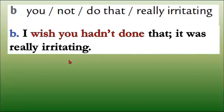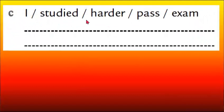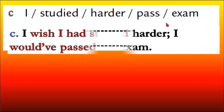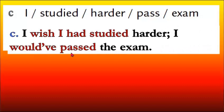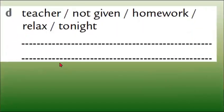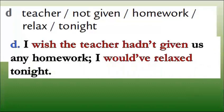Sentence C: 'I studied harder — pass exam.' Answer: 'I wish I had studied harder — I would have passed the exam.' Sentence D: 'Teacher not given homework — relax tonight.' Answer: 'I wish the teacher hadn't given us any homework — I would have relaxed tonight.'